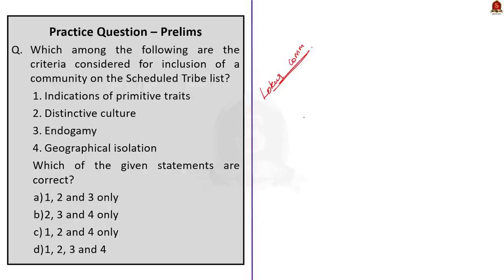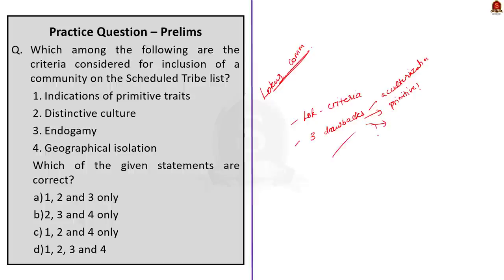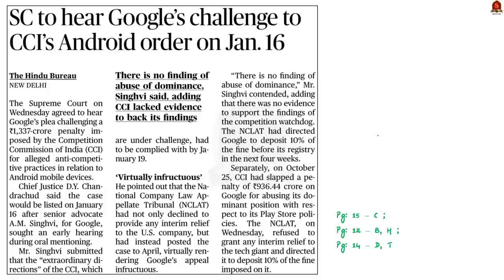In this news article discussion, we firstly saw the Lokur Committee criteria and why it is slowly becoming irrelevant — there is a lot of acculturation happening, and the requirements of primitivity and geographic isolation are slowly becoming irrelevant. We also saw the new criteria proposed by the government task force. Now look at this news article. Yesterday, the Supreme Court agreed to hear Google's appeal against a penalty imposed by the Competition Commission of India for alleged anti-competitive practices relating to Android mobile devices.